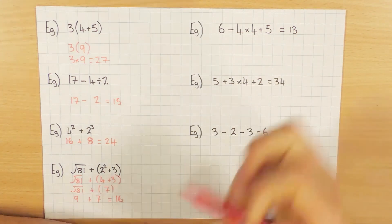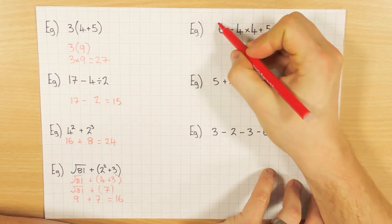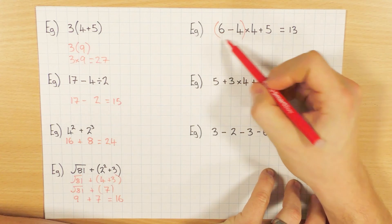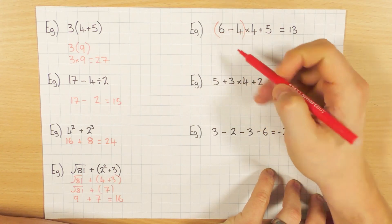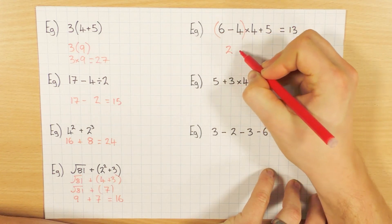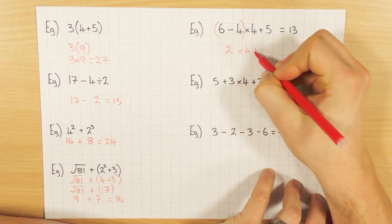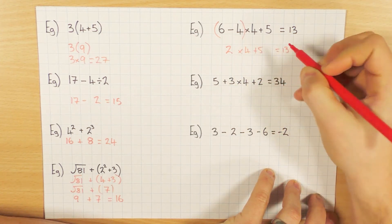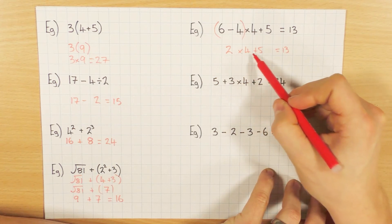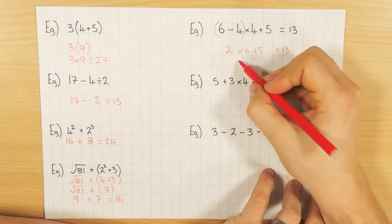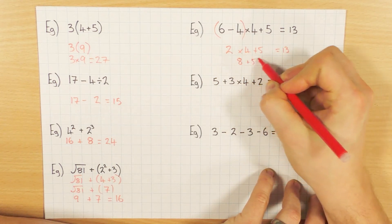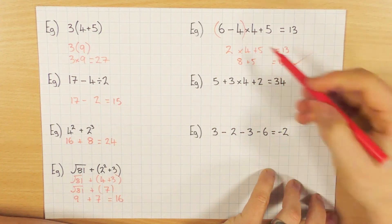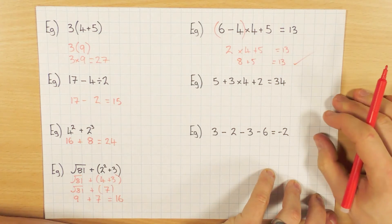Let's start with brackets at the front. 6 take away 4 gives me 2, then times 4 plus 5, needs to equal 13. Multiplication comes first: 2 times 4 is 8, plus 5 equals 13. That's correct, so the brackets go at the front.